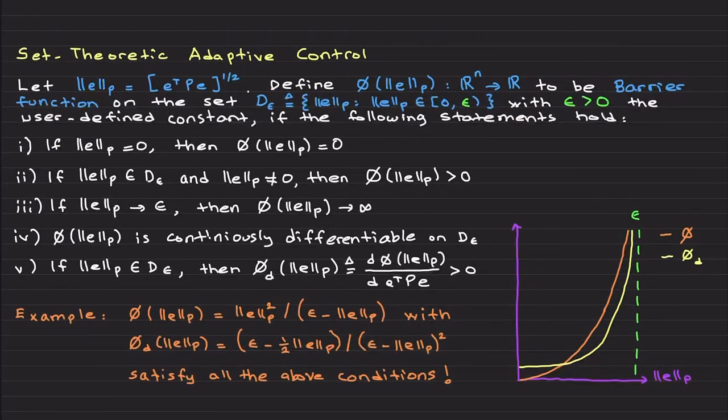I am going to introduce set-theoretic adaptive control, which is predicated on barrier functions. Let me first define a barrier function. I am defining this norm, weighted Euclidean norm, to be like this. And I am saying that this phi is a barrier function defined on the set D epsilon. This D epsilon is the set such that e lives between zero and user-defined constant epsilon if the following statements hold.